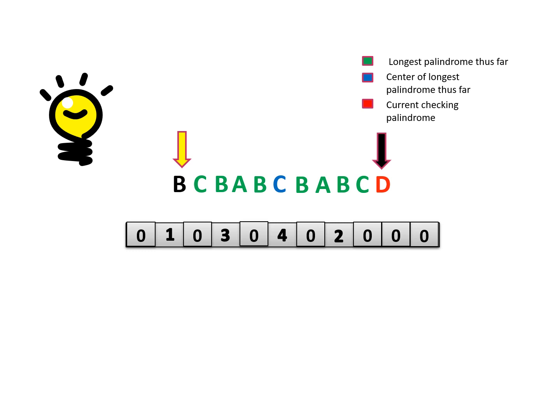We have come to the end of the array. We get the maximum value in the array, which is 4, and the index points to the character C in the string. We expand from this character 4 times to the left and 4 times to the right to get the result. This is the longest palindromic substring for this string.